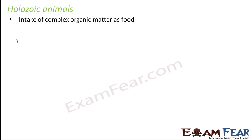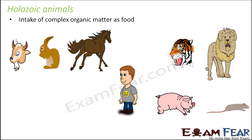Most of the animals we see around us — whether human beings, lion, tiger, horse, or rabbit — eat solid food, and solid food is always complex food. These types of animals which take in solid food are called holozoic animals.